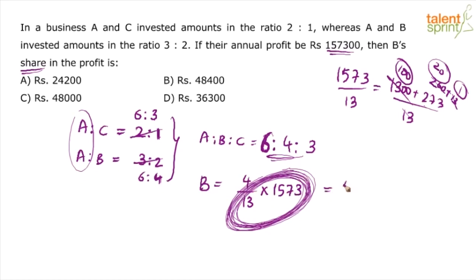121 into 4? 484. That's your answer. Option B is your answer. 484. Of course, two zeros that we had here have to be added here.